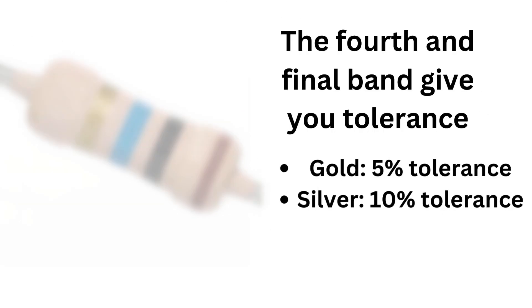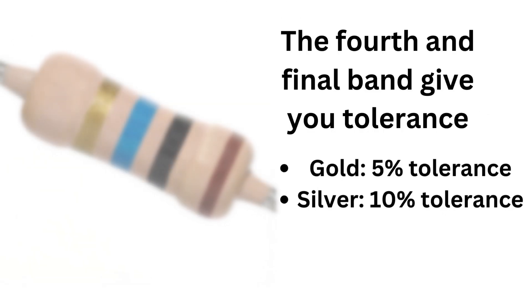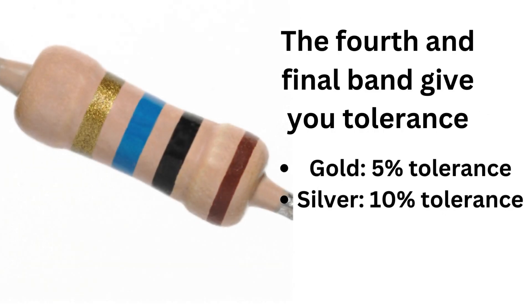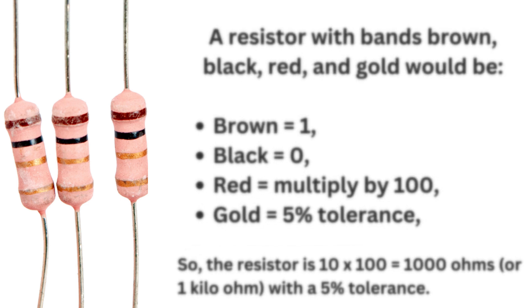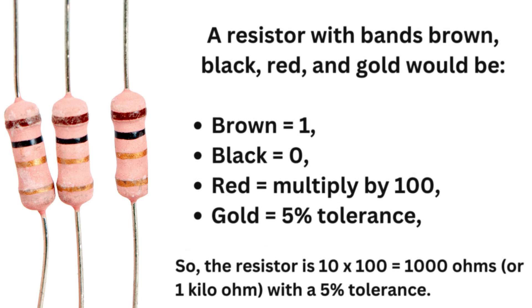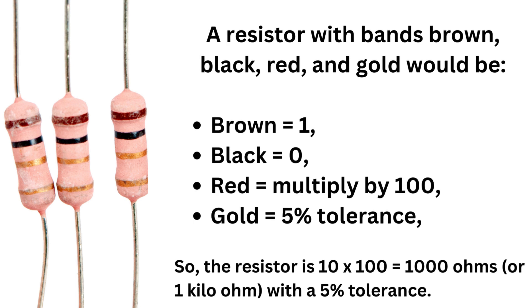The fourth and final band gives you tolerance: gold means 5% tolerance, and silver means 10% tolerance. For example, a resistor with bands brown, black, red, and gold would be: brown=1, black=0, red=multiply by 100, gold=5% tolerance. So the resistor is 10 × 100 = 1000 ohms, or 1 kilohm, with a 5% tolerance.